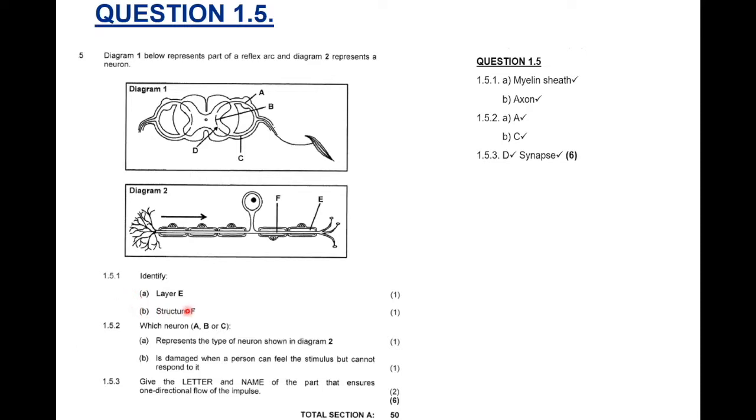1.5.1: They want you to identify layer E. And layer E is the one that's surrounded around or surrounds F. So, we should know that layer is the myelin sheath. Make sure you know how to spell this. I'm not sure if you've noticed, but this question and this label comes out all the time. B. Structure F. We know the myelin sheath surrounds the axon. 1.5.2: Which neuron, A, B, or C, represents the type of neuron shown in diagram 2? Diagram 2 is a sensory neuron. Now, let's look at the pathway. We know the sensory neuron transmits the impulse to the spinal cord. The B will be the interneuron. C will be the motor neuron. So, of course, your answer is A. A represents the sensory neuron.